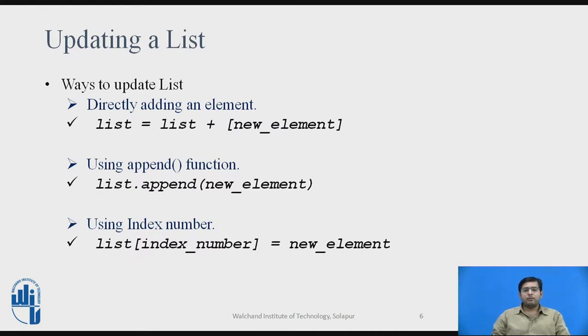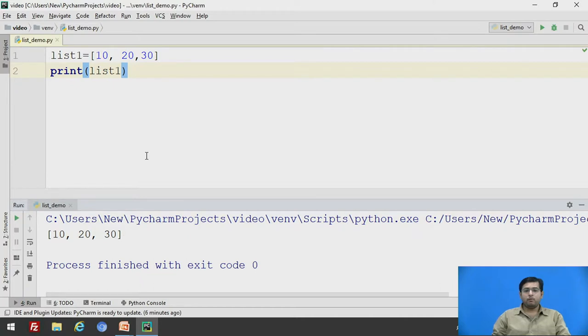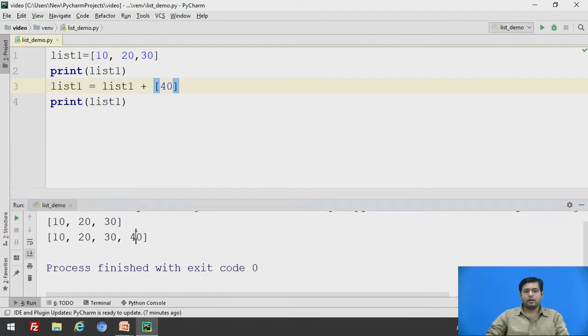Now, updating the list. There are three ways to update a list. You can directly add an element to the list. You can use append function, or using the index number of the list, you can add a new element. Index number of the list starts with zero. We will see one by one. We want to add an element to this particular list. We will say list1 is equal to list1 plus, you want to add an element, say we will add 40. 40 should be again enclosed in square brackets to define that it is an element of the list, and it is to be added to list1. Now we will print this again. See what will be the output for this. We will run this. 40 has been added to the list.